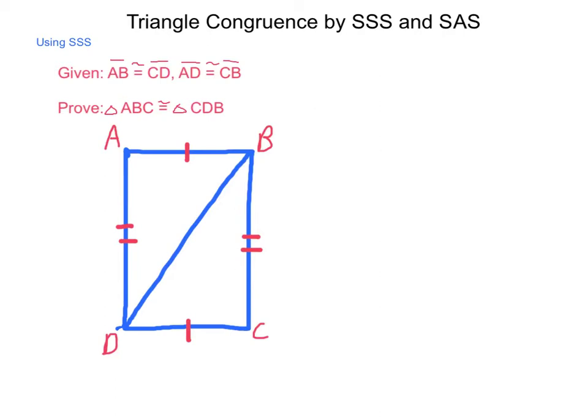We have, in our proof style here, that line segment AB is congruent to line segment CD, and that is a given fact, or a given piece of information. Next, we have that line segment AD is congruent to line segment CB, and again, that is a given piece of information.